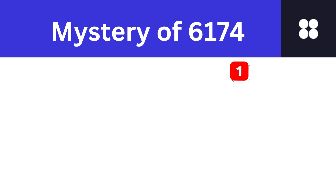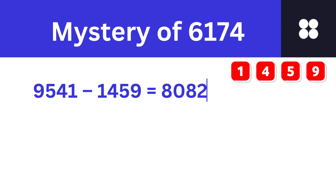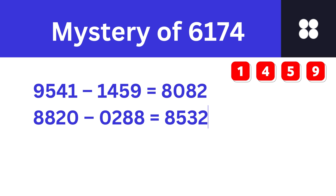As an example, I am choosing the 4-digit number 1459. Arrange 1459 in descending order, you will get 9541. Arrange it in ascending order, you will get 1459. Subtract the smaller number from the bigger number — you will get 8082. Arrange 8082 in descending order, you will get 8820. Arrange it in ascending order, you will get 0288. Subtract the smaller number from the bigger number — you will get 8532.